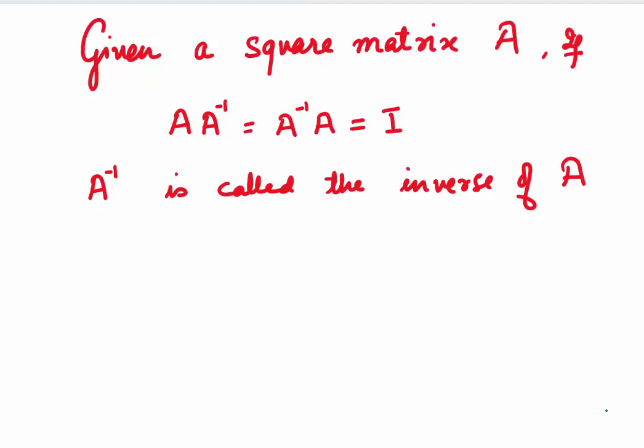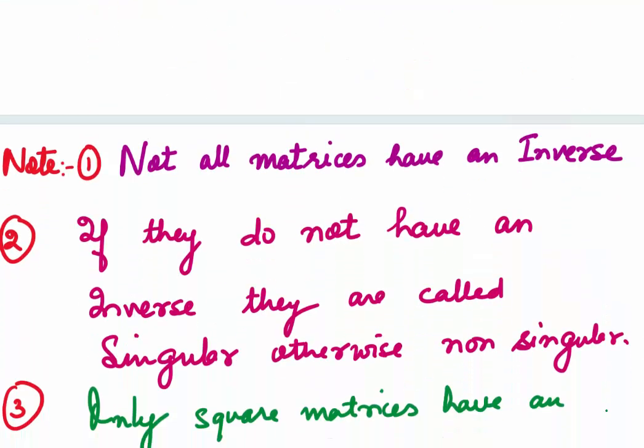Let's take A to be some square matrix and take another matrix written as A⁻¹. When we post-multiply A by A⁻¹ or pre-multiply A by A⁻¹ and we get the identity matrix I, the multiplicative identity I, then A⁻¹ is called the inverse of A.